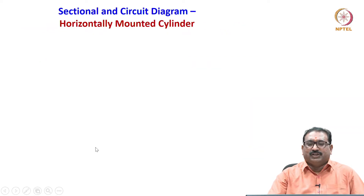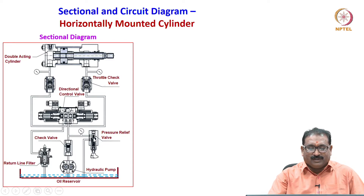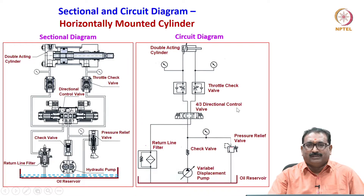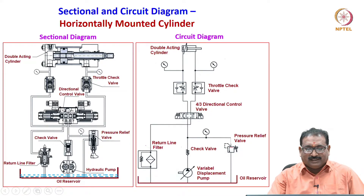Now we will see the sectional and circuit diagram of the horizontally mounted cylinder. This sectional diagram shows a double-acting cylinder with a piston and piston rod, throttle check valves, direction control valve, pressure relief valve, check valve, return line filter, and hydraulic pump. These are schematically represented in the hydraulic circuit using various symbols, which we will discuss in detail in the next class.